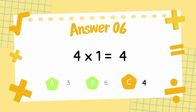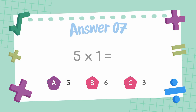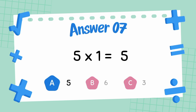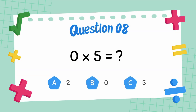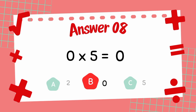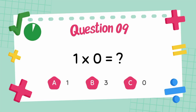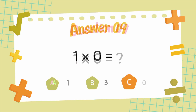What is 5 multiply 1? The answer is 5. What is 0 multiply 5? The answer is 0. What is 1 multiply 0? The answer is 0.